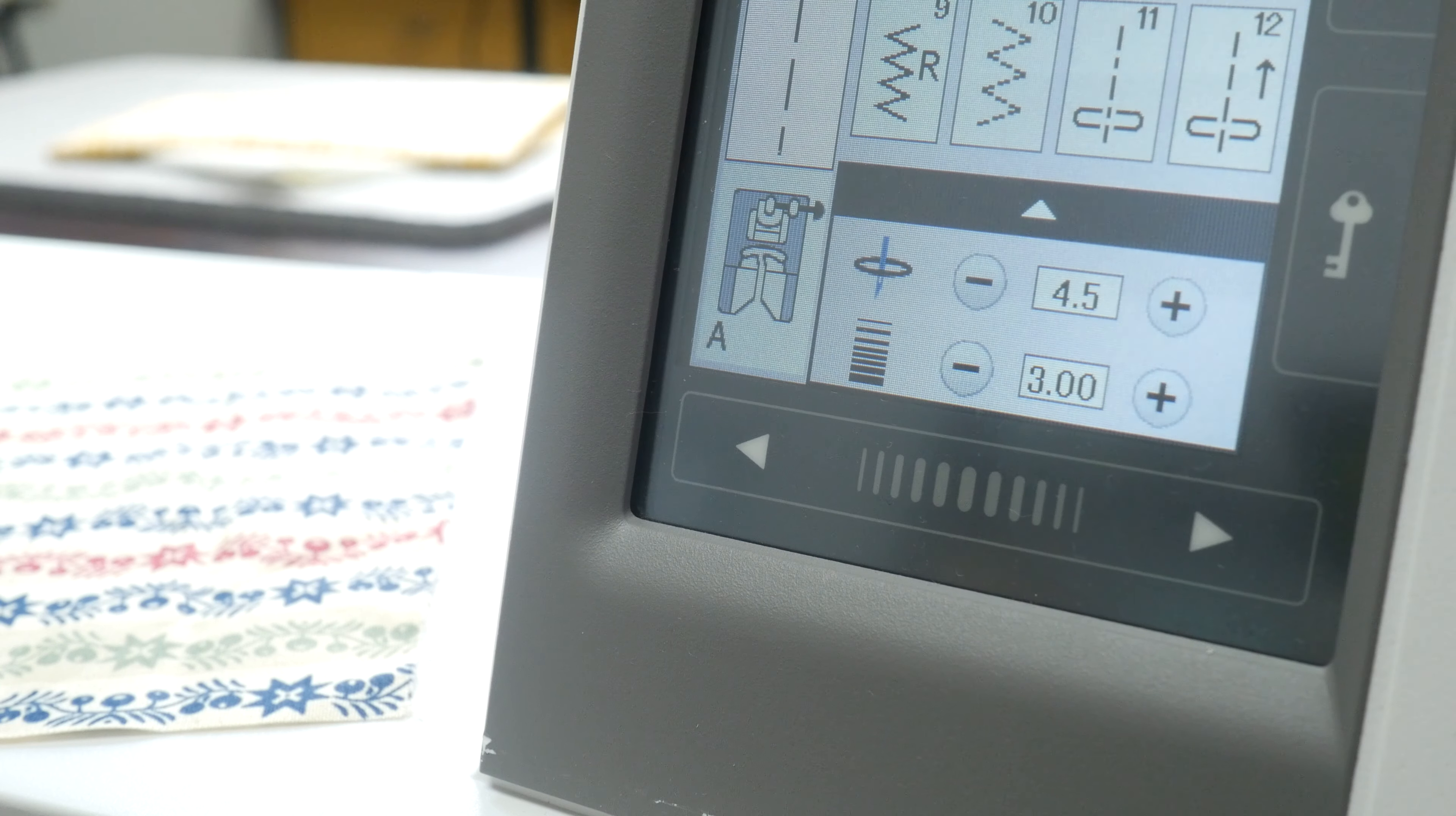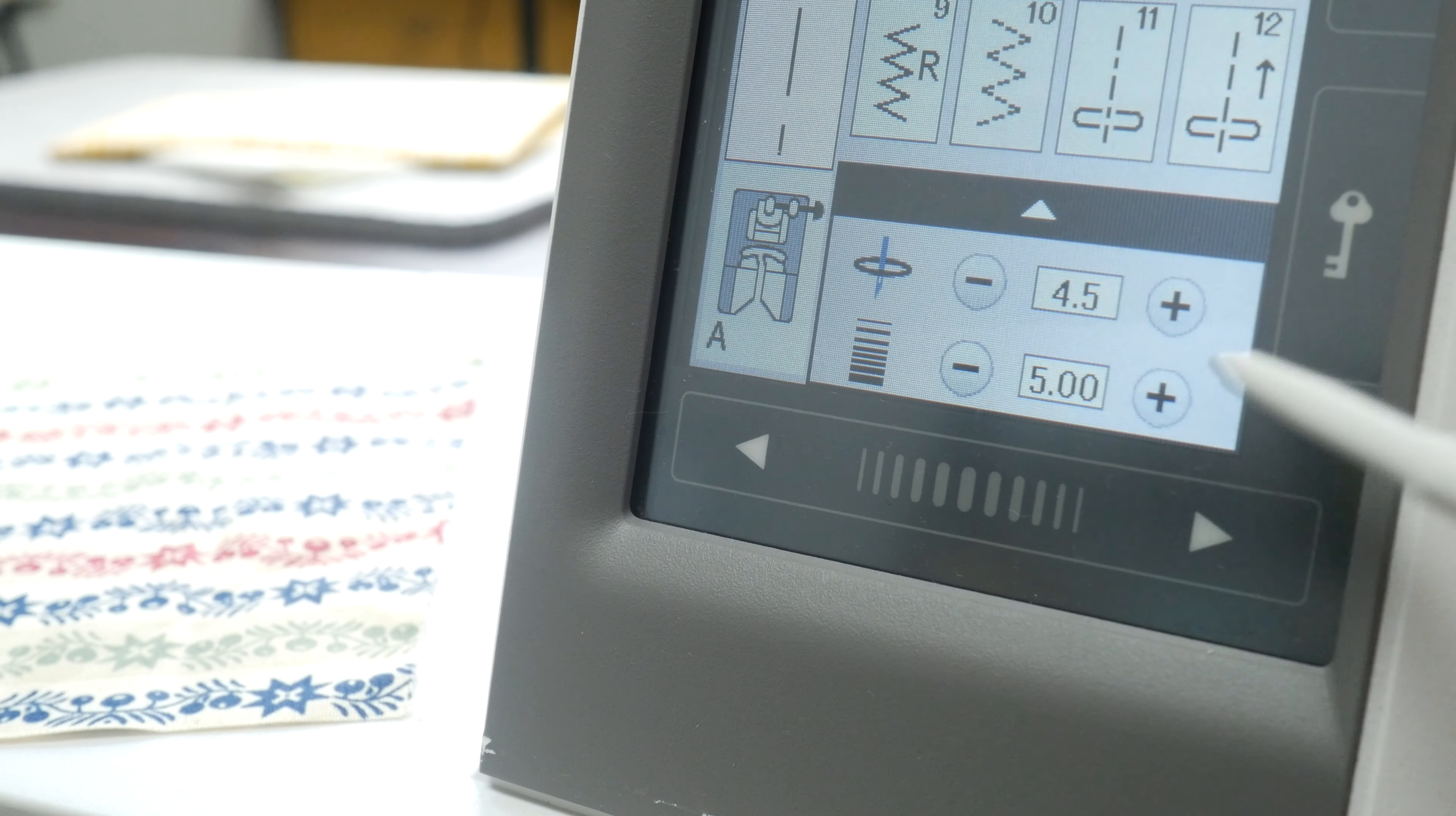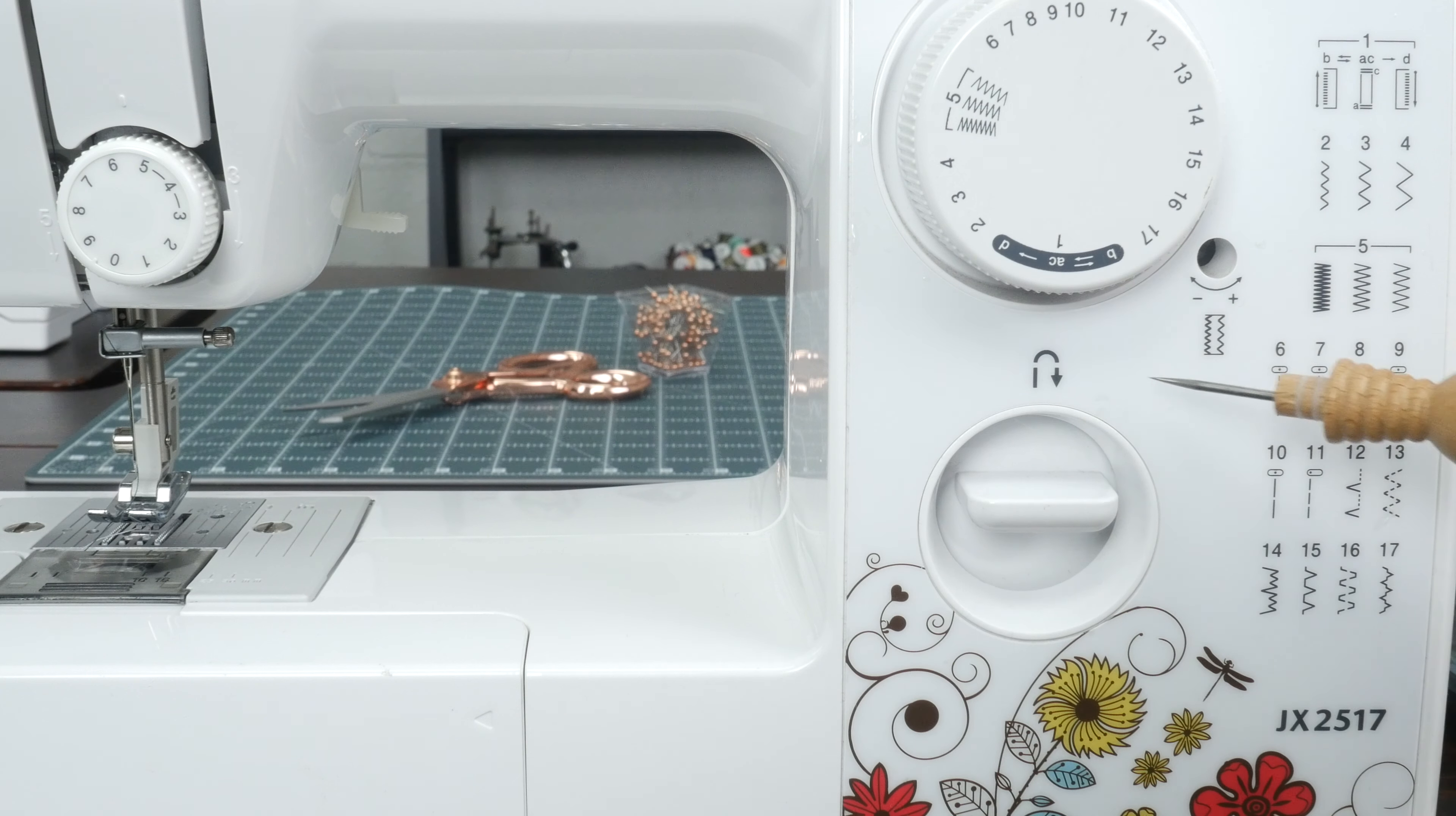Now you just need to adjust your stitch length. This is going to vary depending on how much gather you are wanting. The way that you increase your stitch length is going to vary depending on the machine. With this little mechanical machine, I just selected the number 10 since it's a straight stitch with a longer stitch option than these other options. Check your manual to see how to make an adjustment to your stitch length on your machine.